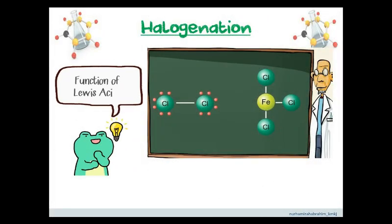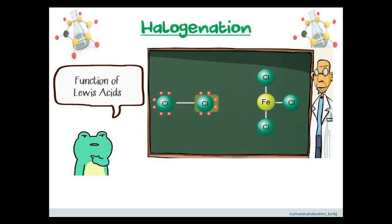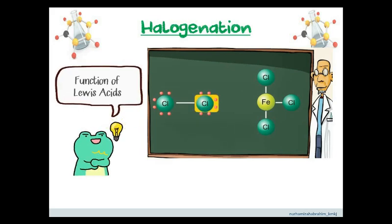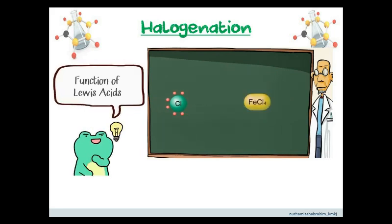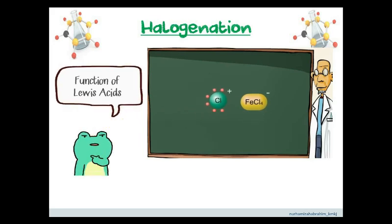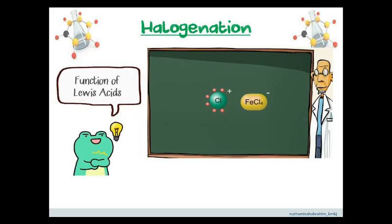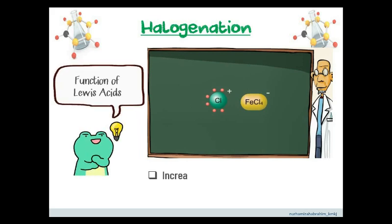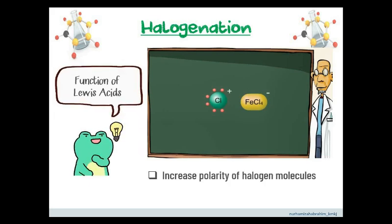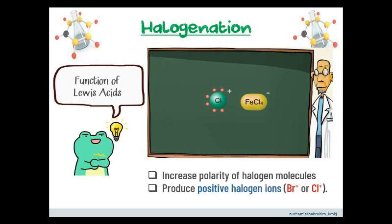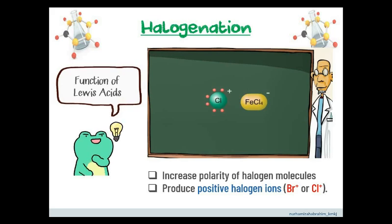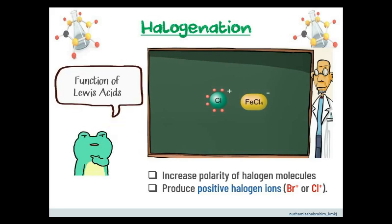The first step of the reaction involves interaction between chlorine and the catalyst. The chlorine atom is the donor of an electron pair. A complex is formed with a positive charge on the chlorine atom and a negative charge on the metal atom. Lewis acid is needed to increase the polarity of halogen molecules and to produce the electrophile — a positive halogen ion such as Br+ or Cl+. You will learn further about this during the mechanism of the reaction.